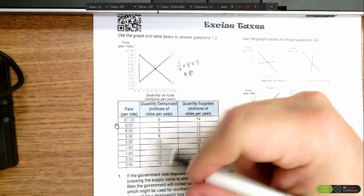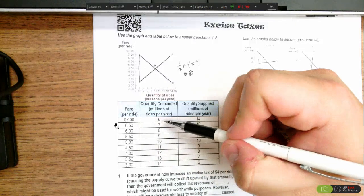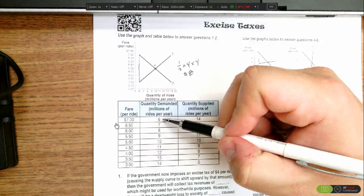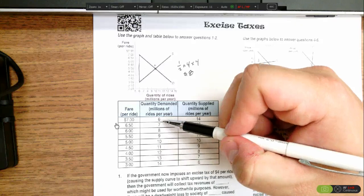That tells me that at $3, there are 6 million rides being supplied. At $7, there are 6 million rides being demanded. So there are 6 million total taxi rides times the $4 tax, which gives us $24 million in tax revenue.